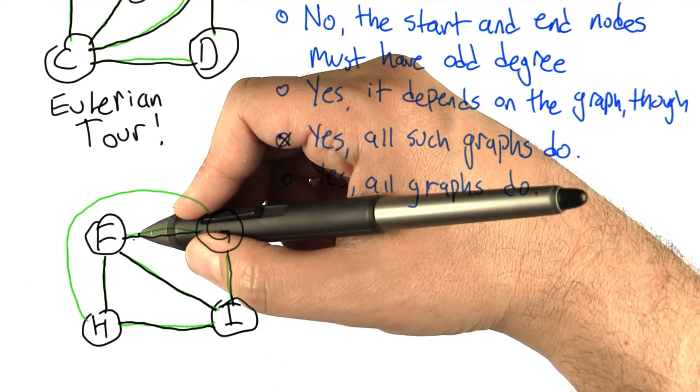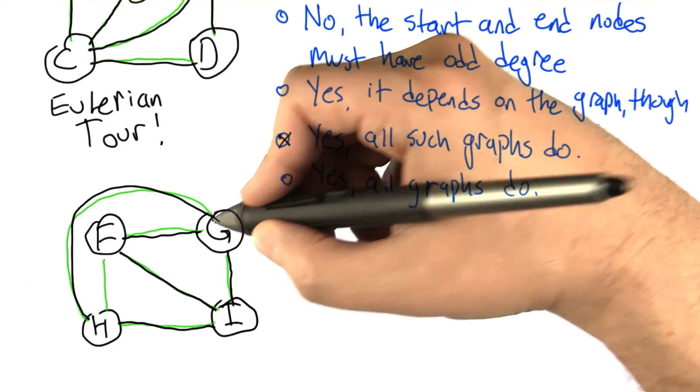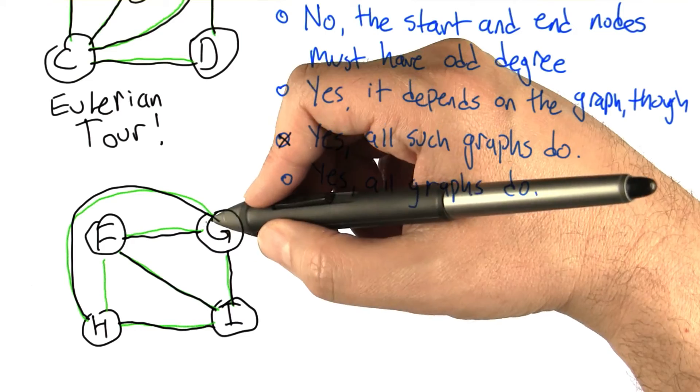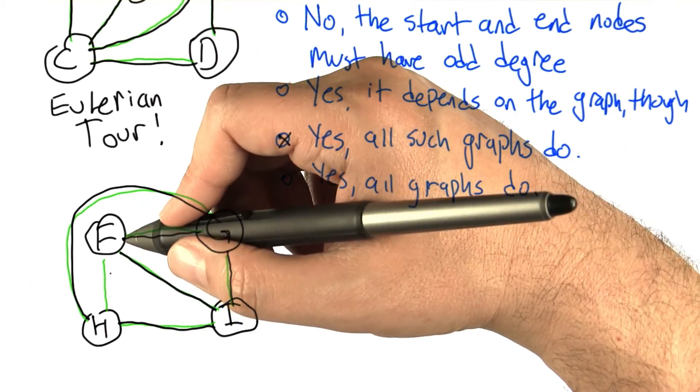and now we hit a dead end. So maybe we didn't want to do that. Let's instead go H to G where we also hit a dead end. And in fact, you can do this all day long, and what you're going to discover is there's always going to be at least one edge that you just can't visit. Because,